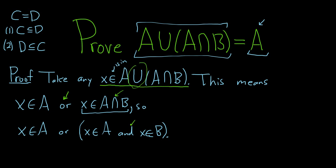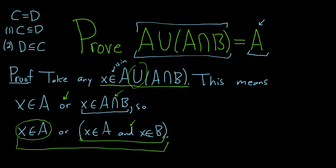Now we just have to notice that X is in A, and here is why. An element is in the union — so this statement is true — if the first condition is true, in which case X is in A and we're done. It could also mean the second condition is true; if that's the case, X is definitely in A, so we're done. Or both conditions are true, and if so, X is in A and we're done. So in any case, X is in A.